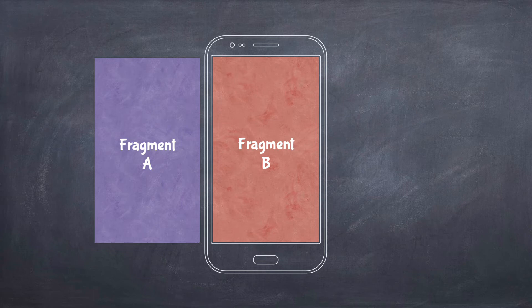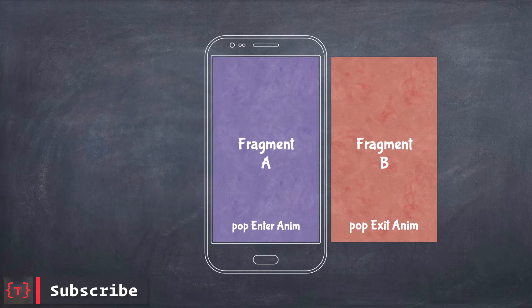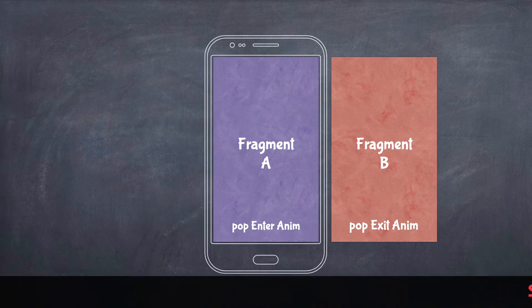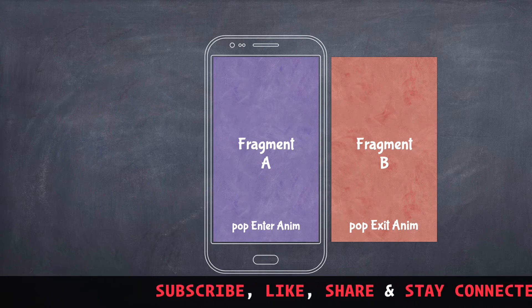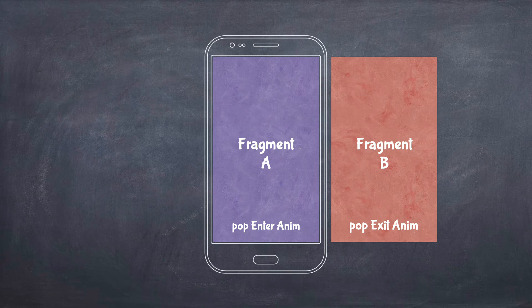Now suppose you press the back button on your device to go from Fragment B back to Fragment A, or press the back button at the top. Fragment B will exit and Fragment A will enter. In this case, Fragment A coming back to the screen takes the pop enter animation, and Fragment B going out of the view takes the pop exit animation. So Fragment A uses exit animation going out, and pop enter animation coming back in.